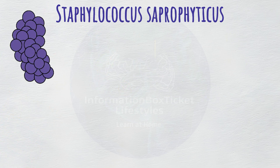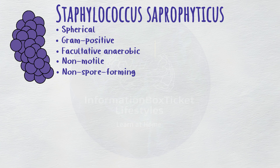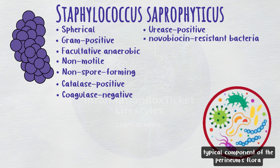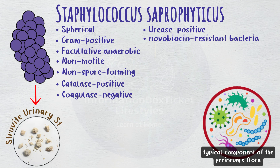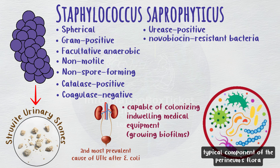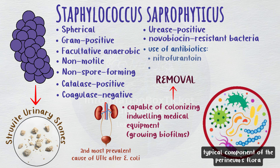To quickly review: the spherical, gram-positive, facultative anaerobic, non-motile, non-spore-forming, catalase-positive, coagulase-negative, urease-positive, and novobiocin-resistant Staphylococcus saprophyticus is recognized as a typical component of the perineum's flora. It can result in the production of struvite urinary stones, making it the second most prevalent cause of UTIs after E. coli. It is also capable of colonizing indwelling medical equipment and growing biofilms there. The removal of contaminated indwelling devices and the use of antibiotics such as nitrofurantoin or a trimethoprim-sulfamethoxazole combination are the mainstays of treatment.